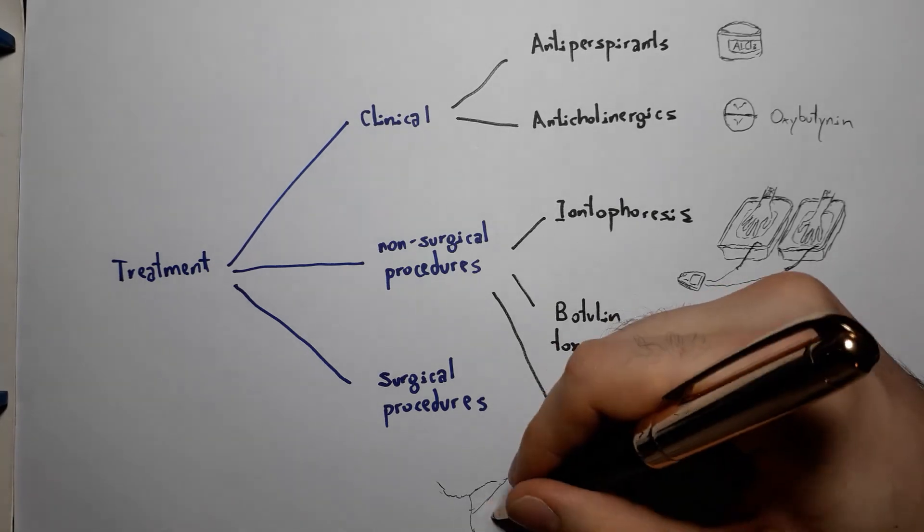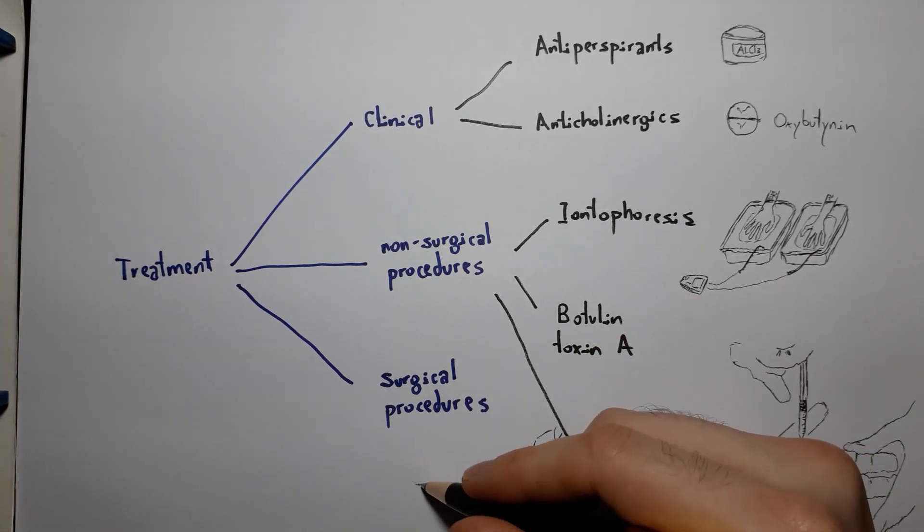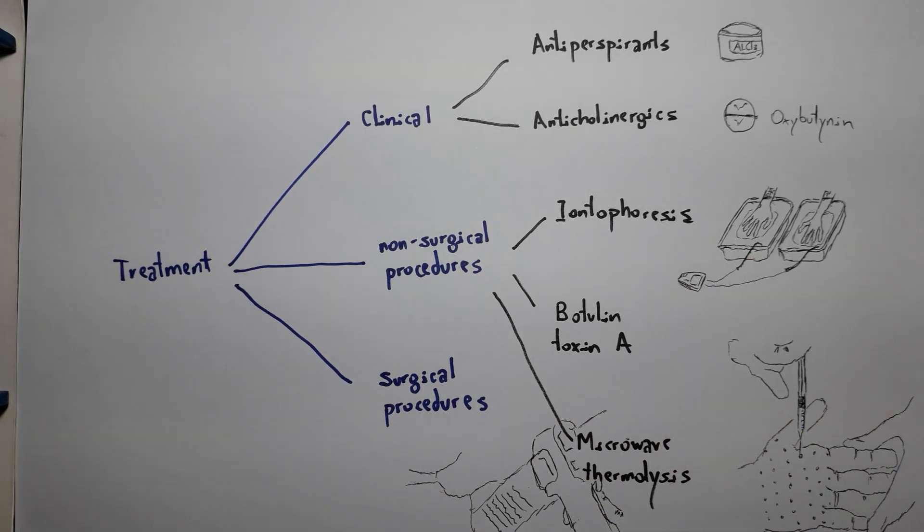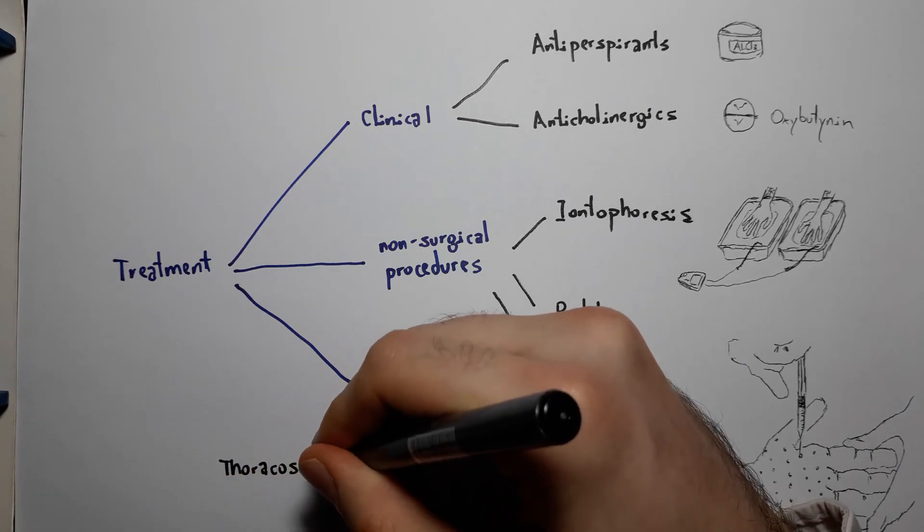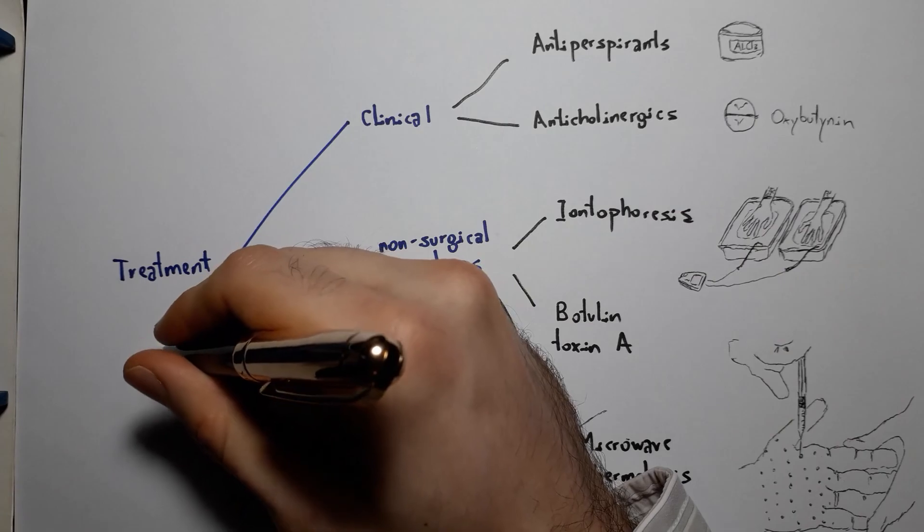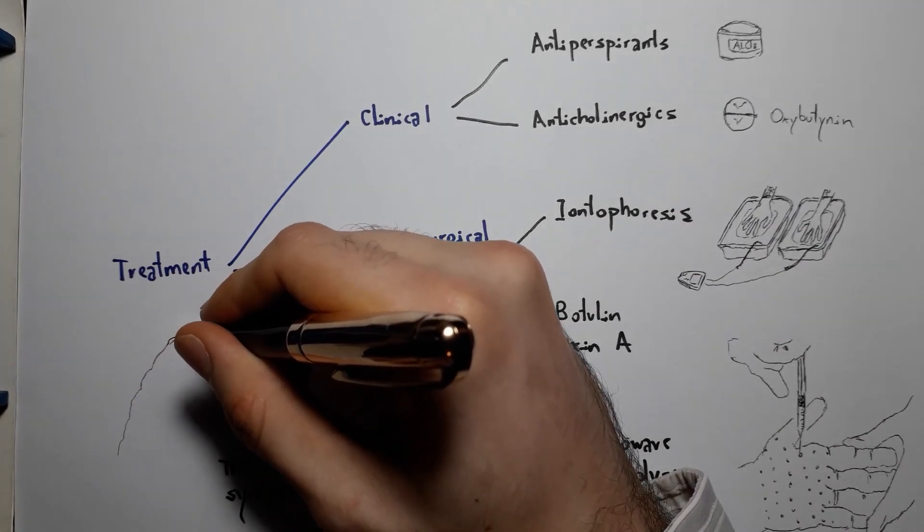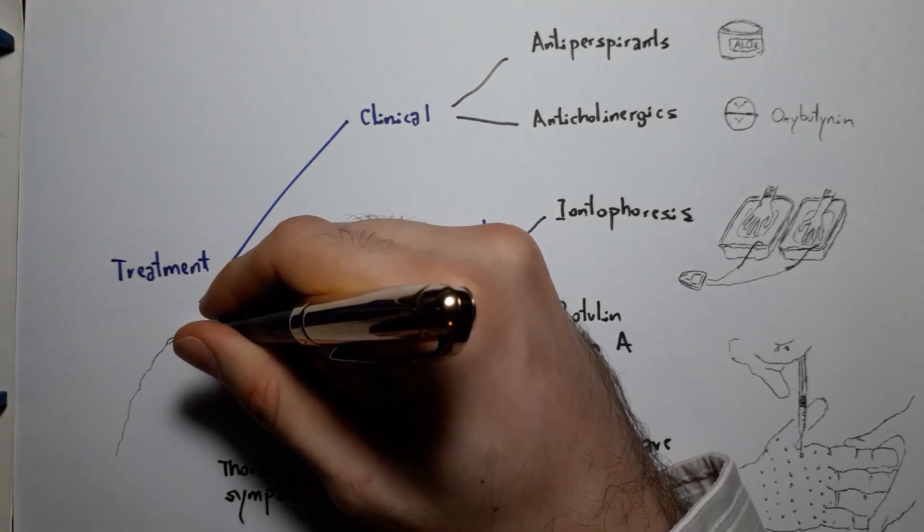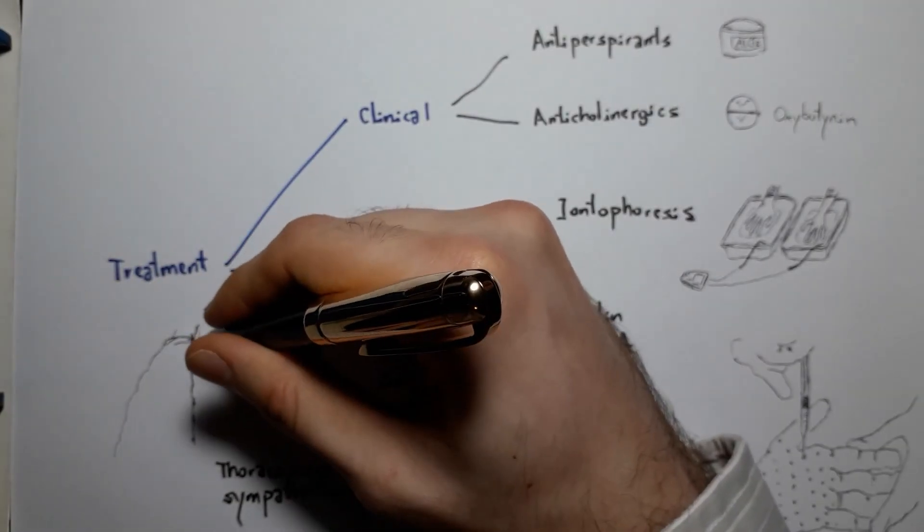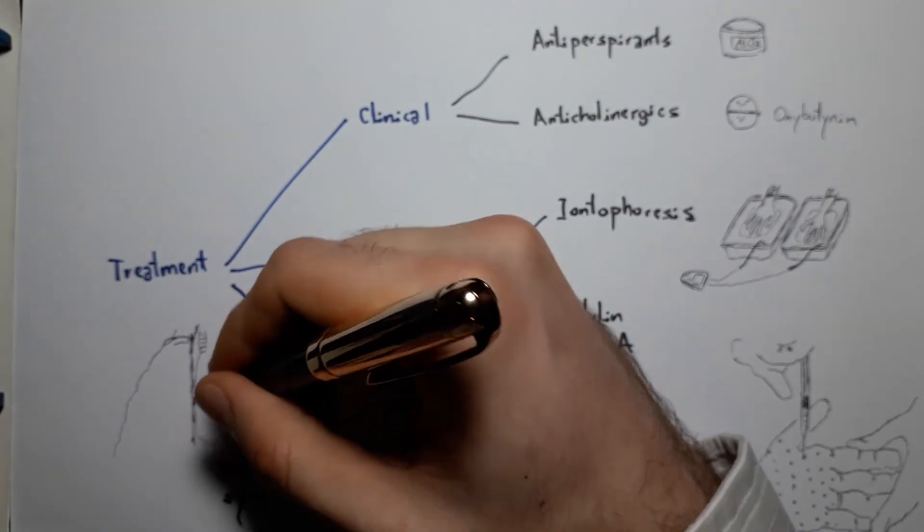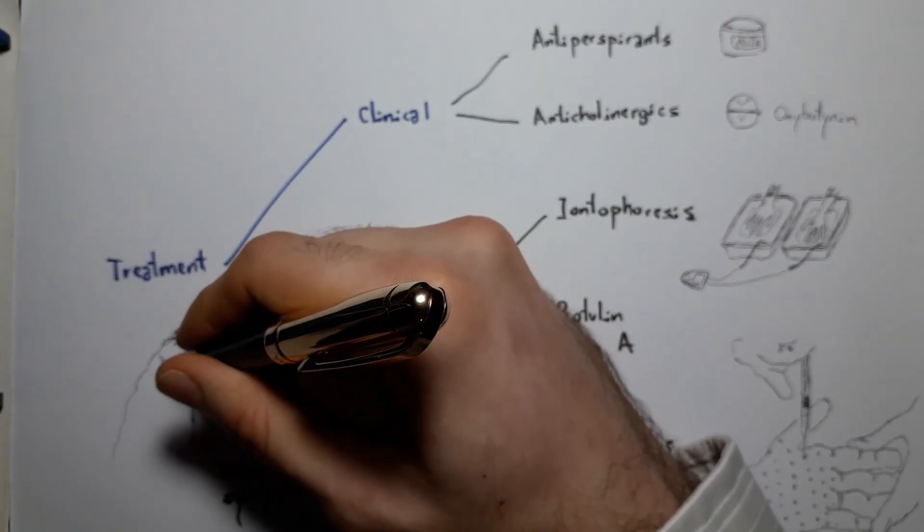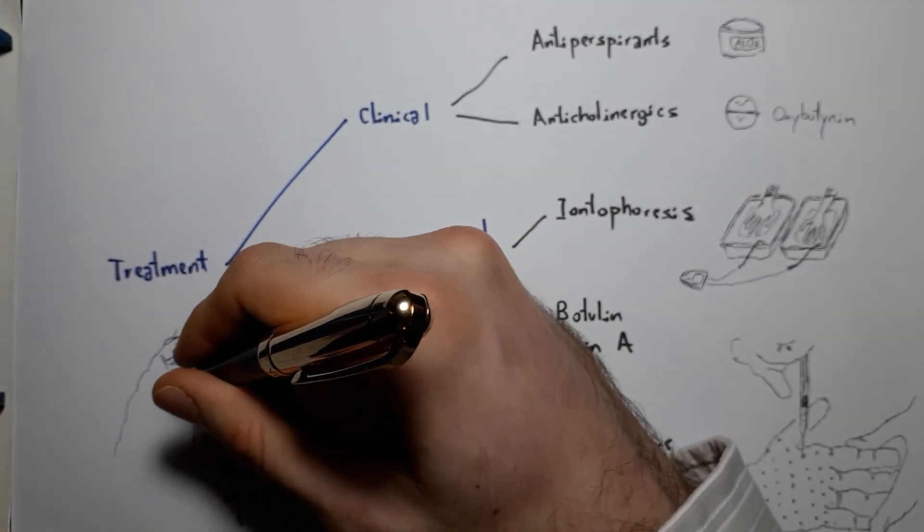And surgical procedures, which consists essentially of thoracoscopic sympathectomy, a video-assisted surgery which aims to stop the sympathetic nerve stimuli right at the sympathetic ganglia, in the posterior thorax, slightly adjacent to the spinal cord.